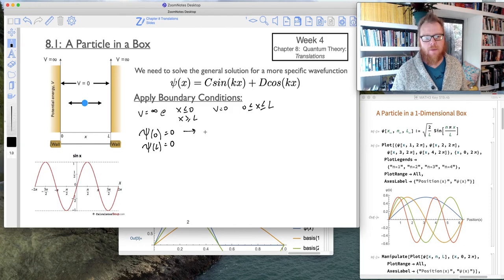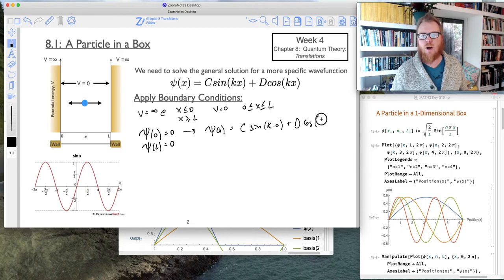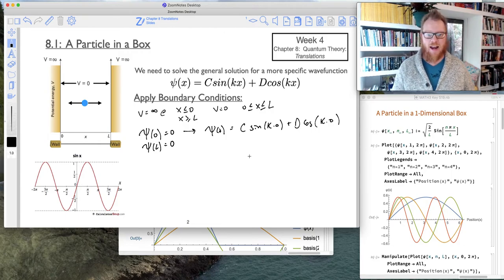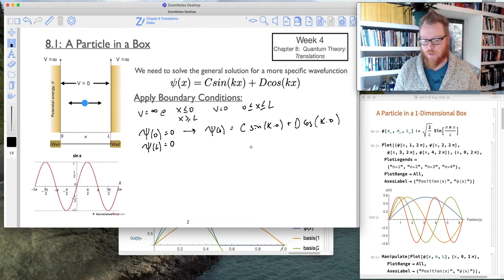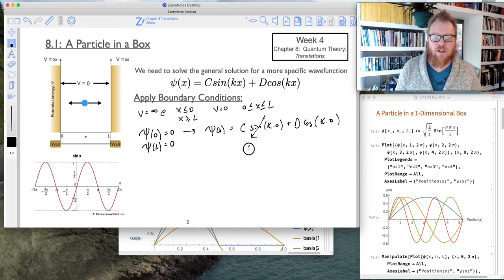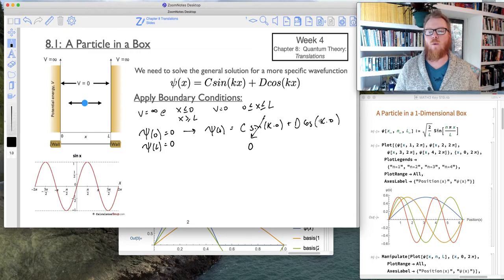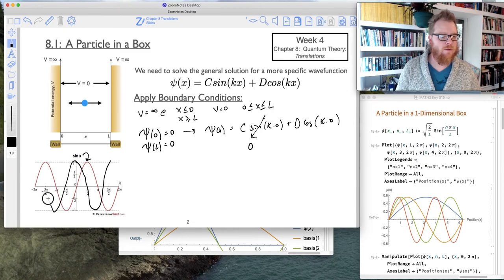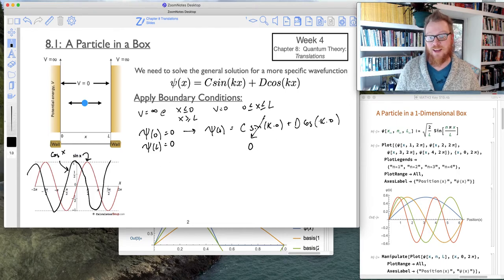So now if we plug in these boundary conditions, if we say psi of 0 equals C times the sine of k times 0 plus D times the cosine of k times 0, what do we get? Well, I put a little sine graph right here just to remind us that the sine of 0 is 0. So that means this whole thing drops out to 0. What about the cosine at 0? Recall here, this is sine of x, so cosine of x is shifted 90 degrees. So that looks like this for my cosine. And now we can see the cosine at x equals 0 is 1.